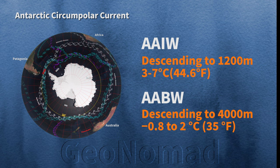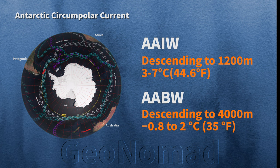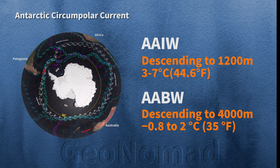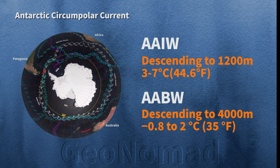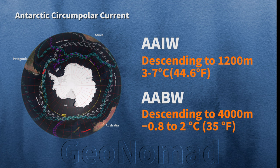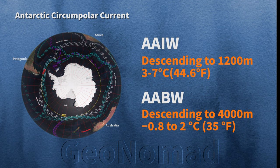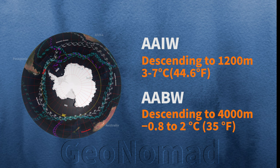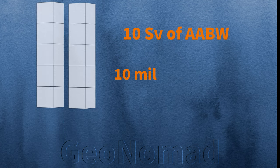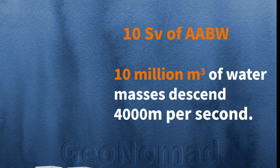AAIW is a relatively saline water mass that forms almost everywhere between 50 degrees south and 60 degrees south, with temperature values of 3 to 7 degrees Celsius. Antarctic Bottom Water, or AABW, has a temperature range of negative 0.8 to 2 degrees Celsius and forms in the Weddell and Ross Seas. The amount of water mass is 10 sverdrups — one sverdrup being 100 cubic meters per second. In other words, 10 water masses of 100 cubic meters descend to a depth of 4,000 meters per second, an unimaginably staggering amount.